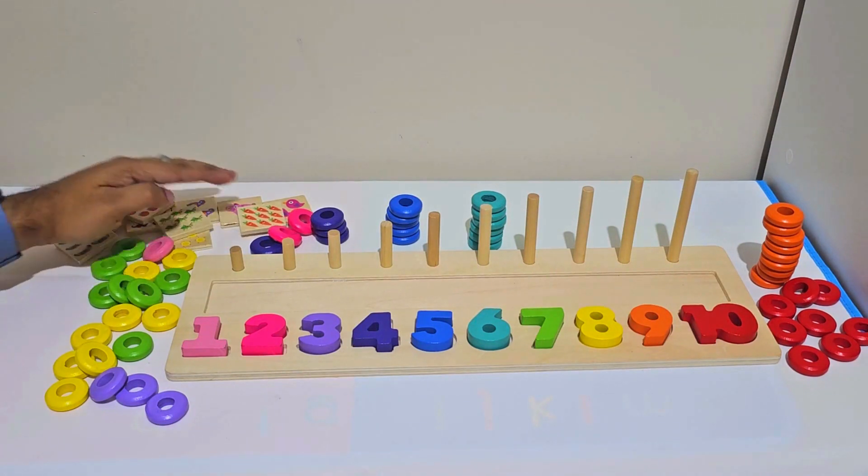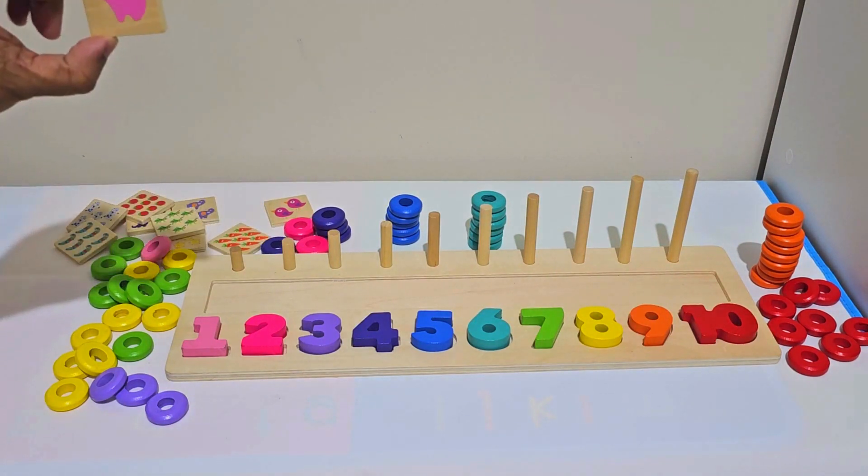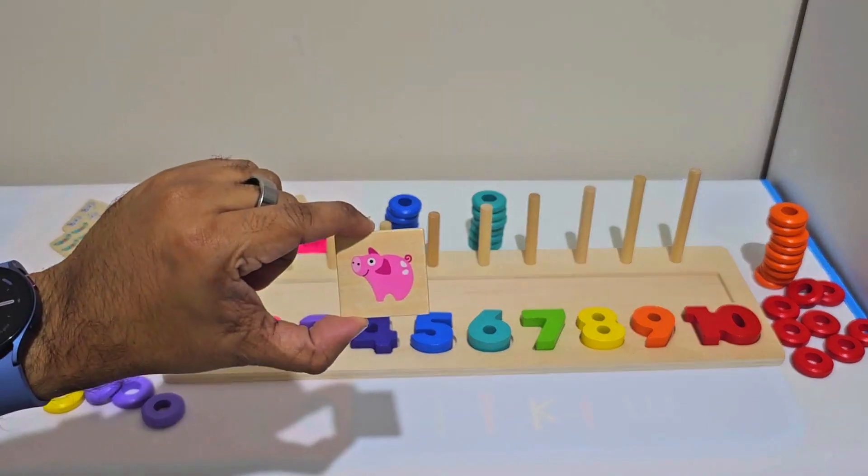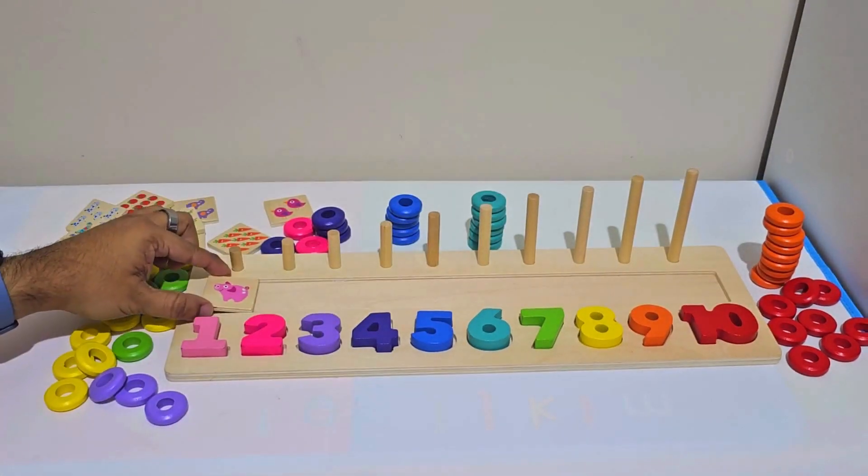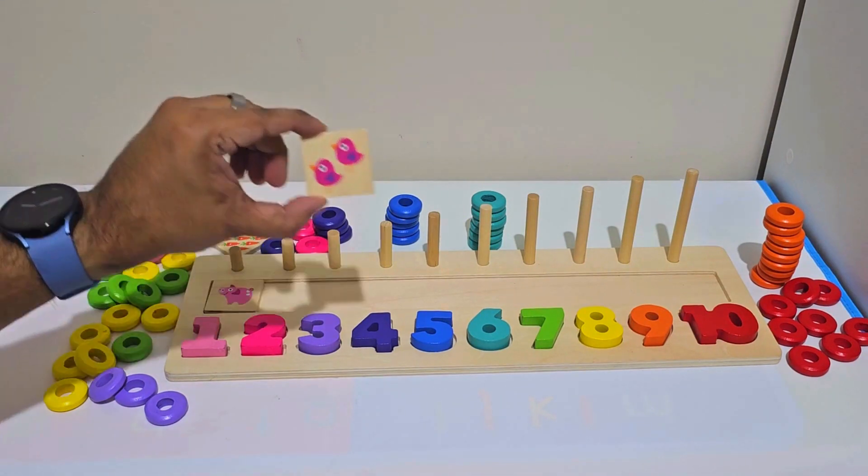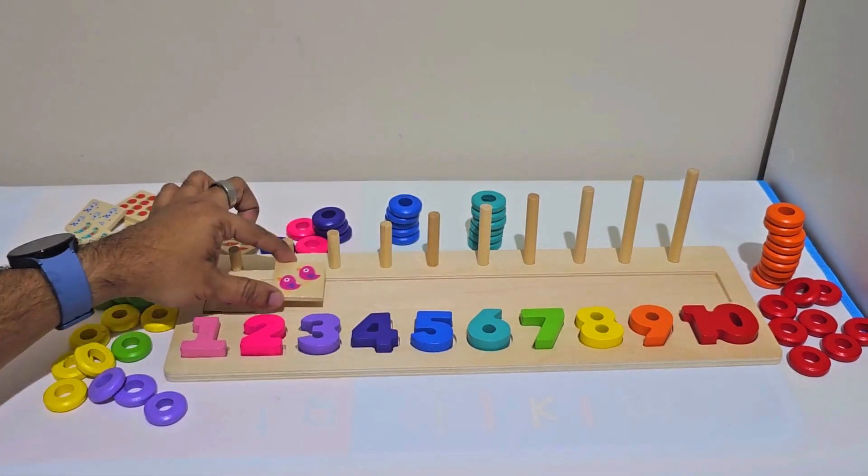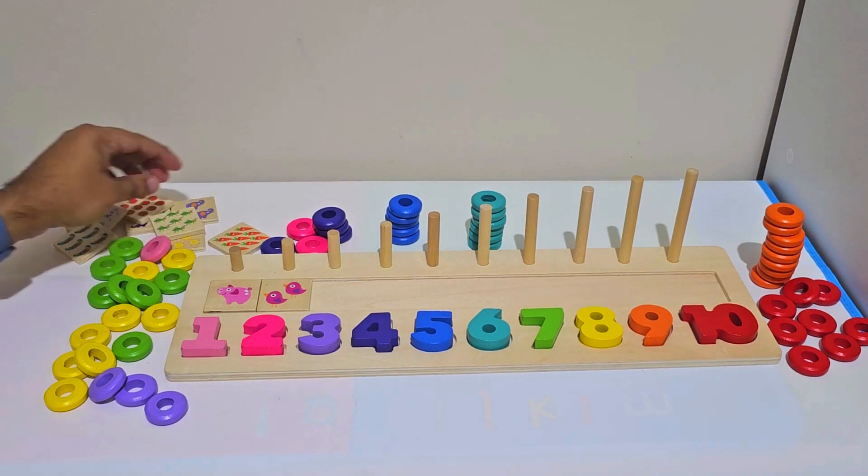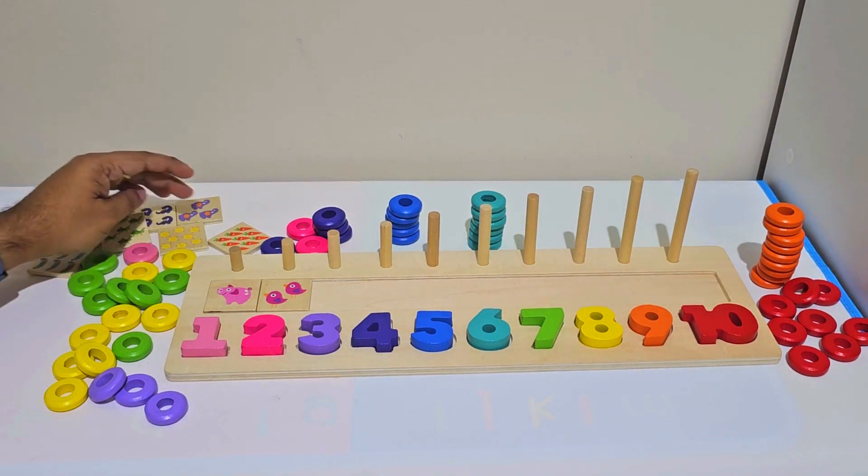Now let's look at what objects we have. Here we have one pink colored pig. So let's put that in front of number 1. Then we have two dark pink colored birdies. Let's put that in front of number 2.